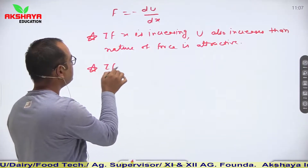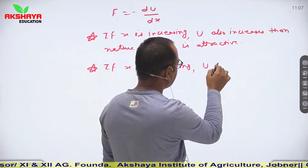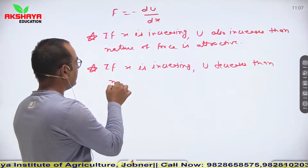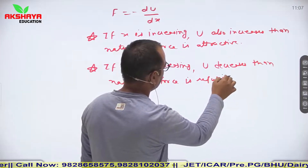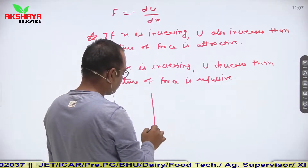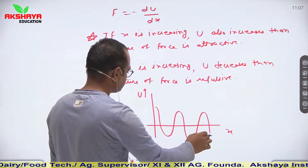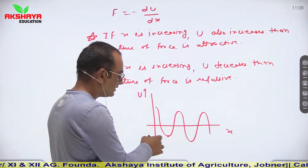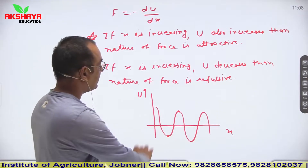Second condition: if x is increasing but potential energy decreases, then the nature of the conservative force becomes repulsive. If we draw a graph between U and x, this graph shows a potential energy curve where certain points represent unstable equilibrium, stable equilibrium, and neutral equilibrium.